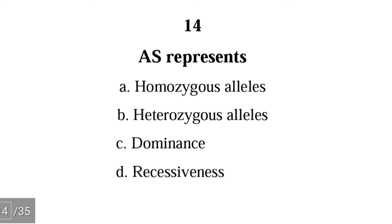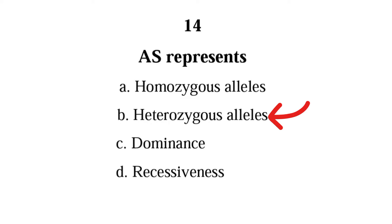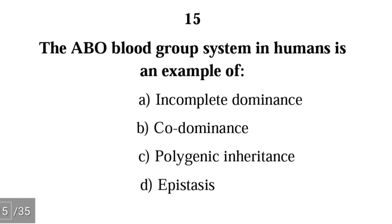Number fourteen: AS represents — homozygous alleles, heterozygous alleles, dominance, or recessiveness. The correct answer is B, heterozygous alleles. Heterozygous alleles is when you have two different alleles controlling a character.